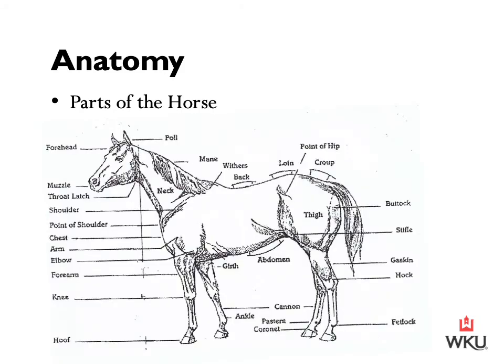Throughout this lecture it will be laid out similarly. We will start with the parts of the horse and then we will look at the underlying bone. In looking at a couple of anatomical characteristics of horses, this is just running through a list of unique anatomy that our horses have.